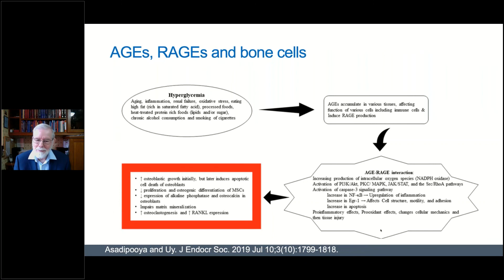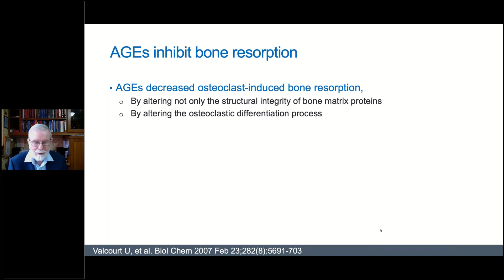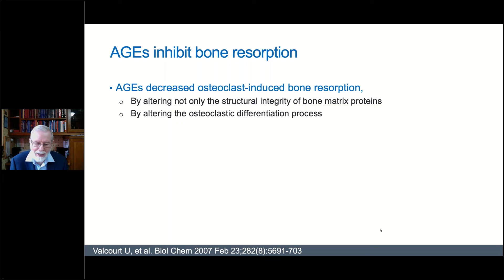A recent review proposes that hyperglycemia results in AGE accumulation, which binds to the RAGE receptor and has pro-inflammatory effects that in the long term decrease osteoblast proliferation and formation. In some models AGEs increase osteoclast activity, but prior data have shown more AGEs actually leads to less osteoclastic bone resorption. It is possible that AGEs are mediating some of the observed decreases in bone turnover — both resorption and formation — but this requires further exploration.